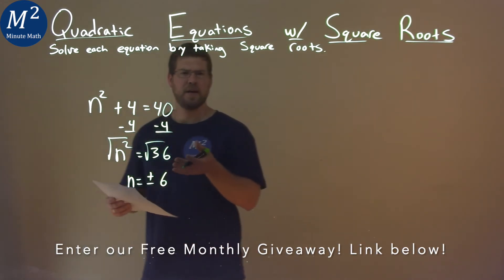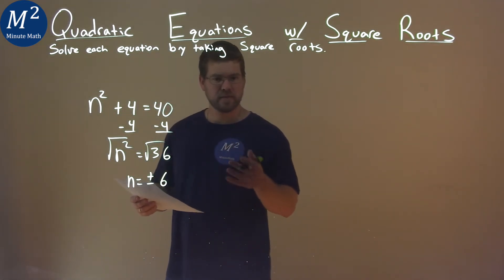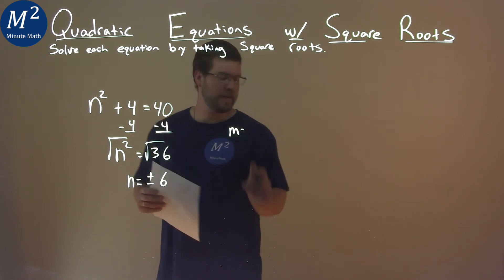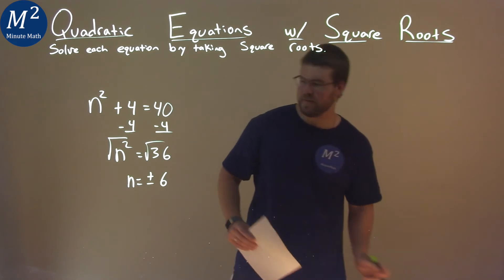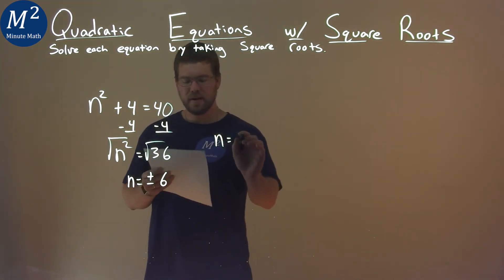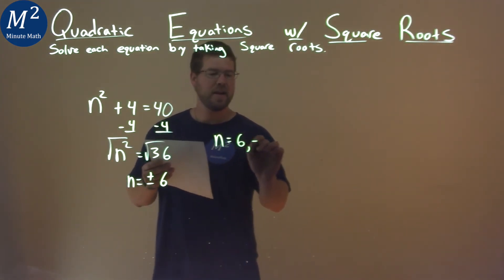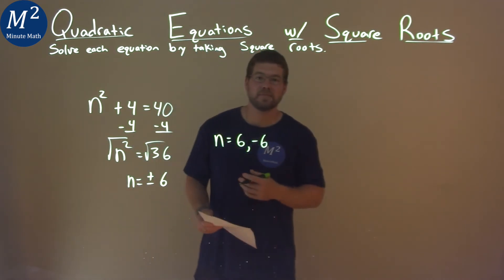So we have n by itself here equals plus or minus 6, which really means n equals positive 6 and negative 6, and that's our final answer.